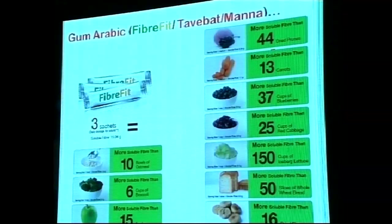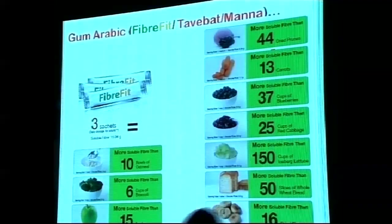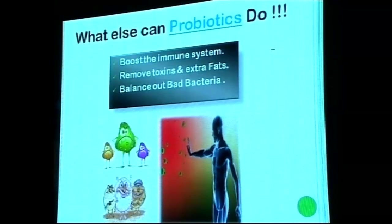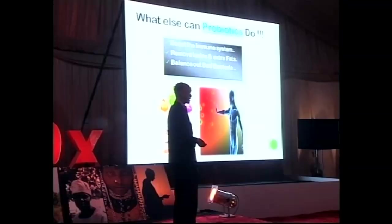Comparing other fruits and vegetables to gum arabic, you can see all kinds of fruits, vegetables, and cereals have very low amounts of prebiotic fiber, which is vital for human life. Beyond fiber removal, the probiotic bacteria residing in your colon also function to boost the immune system against disease and remove toxins and excess fats.